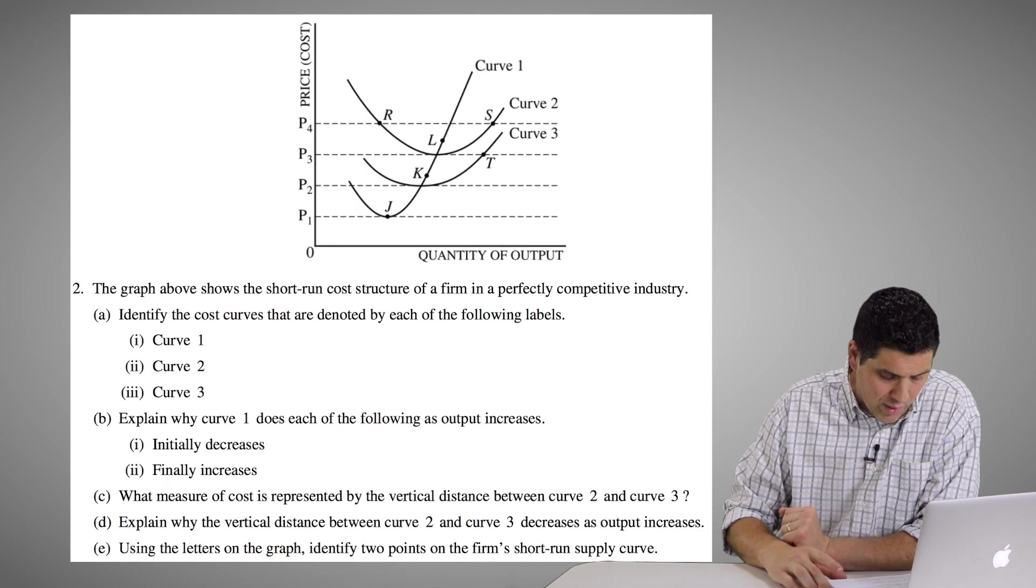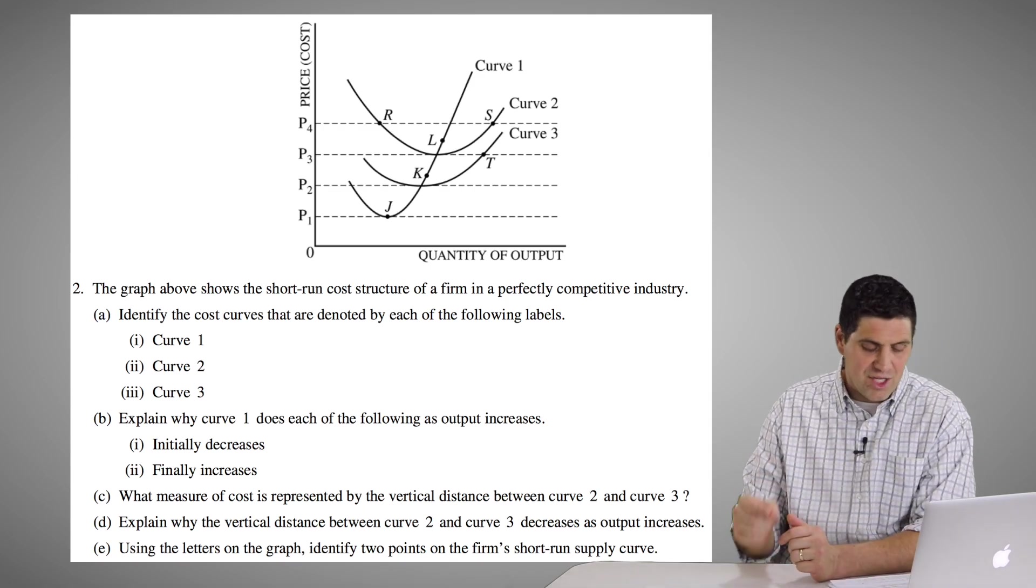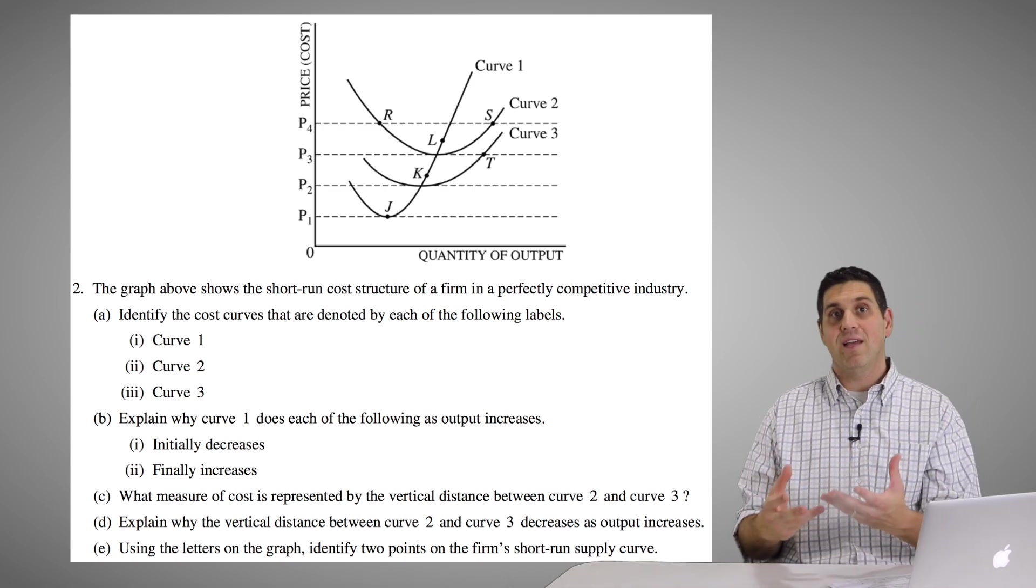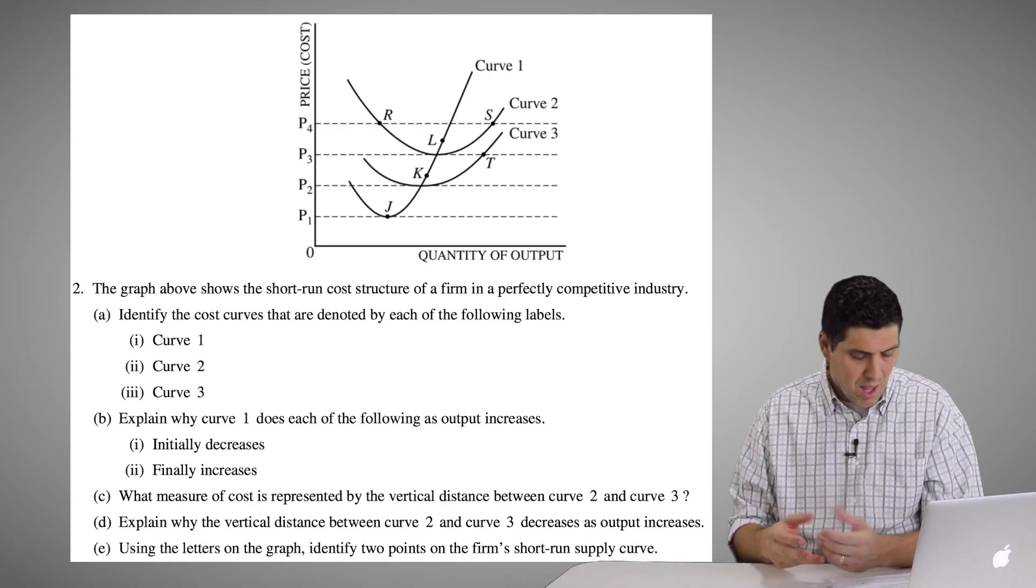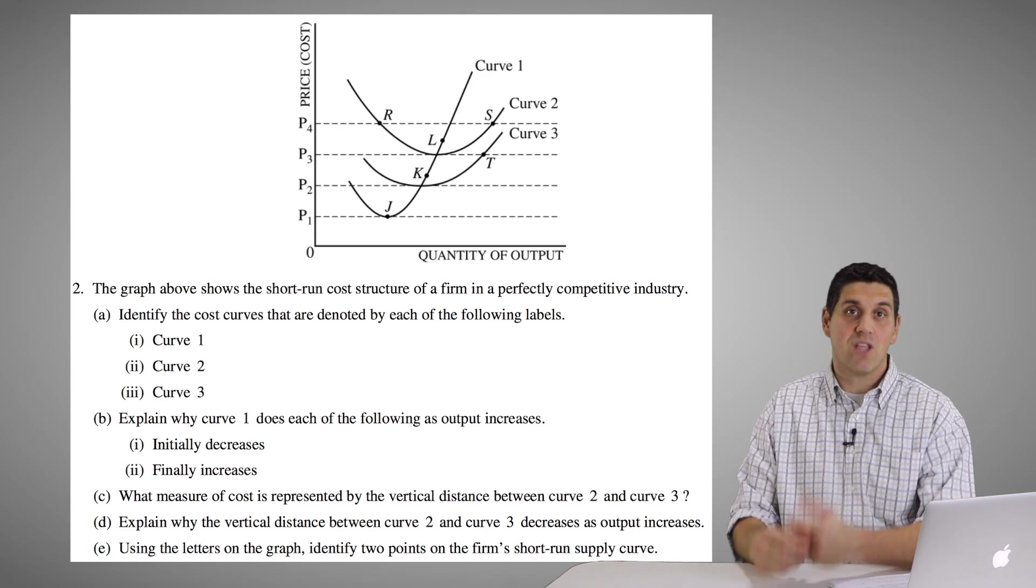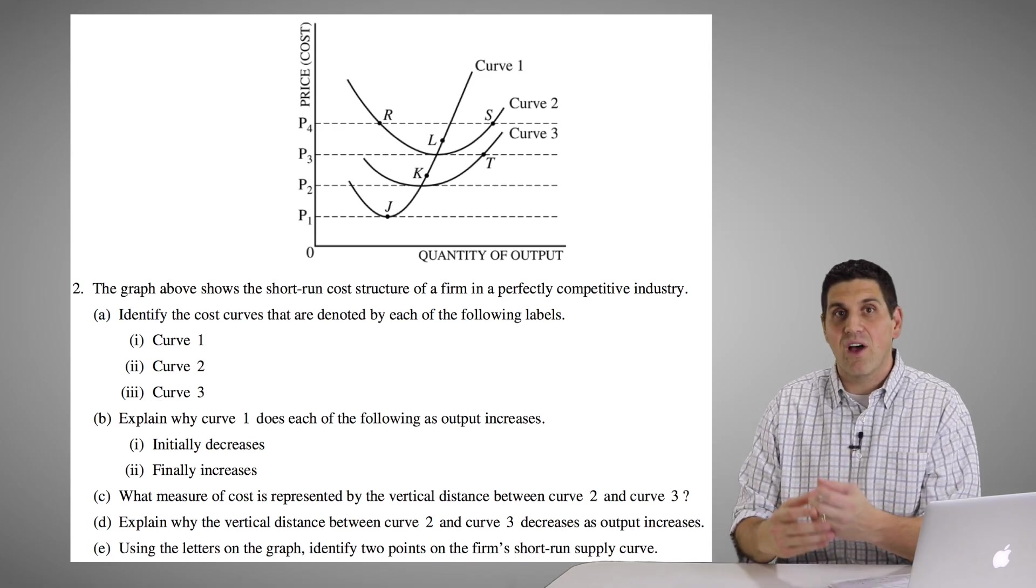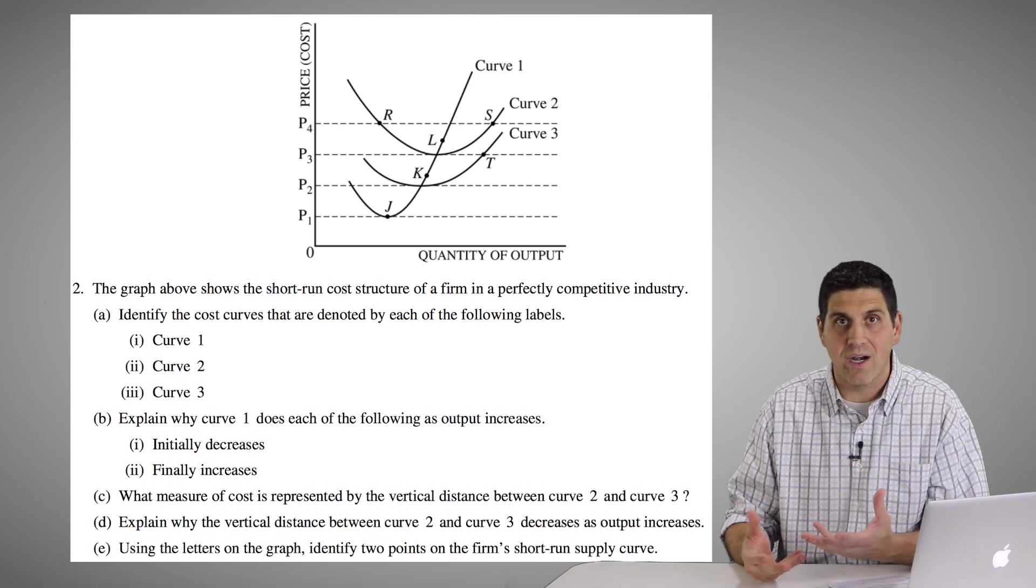So to answer the actual question, marginal cost initially decreases because of specialization, because workers are more and more productive as you first start producing. But then it starts finally increasing because of the law of diminishing marginal returns, because of fixed resources. Either one of those answers would work here.